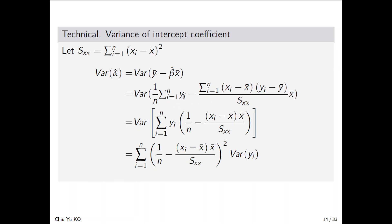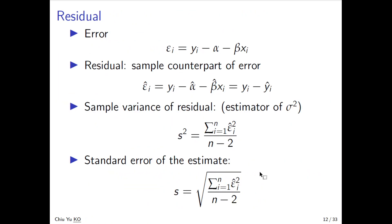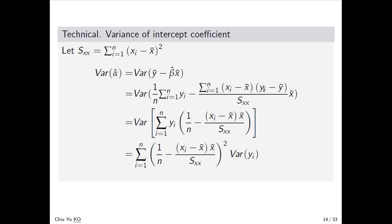We take y_i out of the expression. Note that the sum of (x_i minus x-bar)(y_i minus y-bar) can also be written as the sum of (x_i minus x-bar) times y_i, so the y-bar term drops out. Factoring y_i out gives a coefficient with 1/n and the (x_i minus x-bar)/S_xx terms. Since x values are constants, we can factor them out, and the variance will involve the square of this coefficient summed over i.